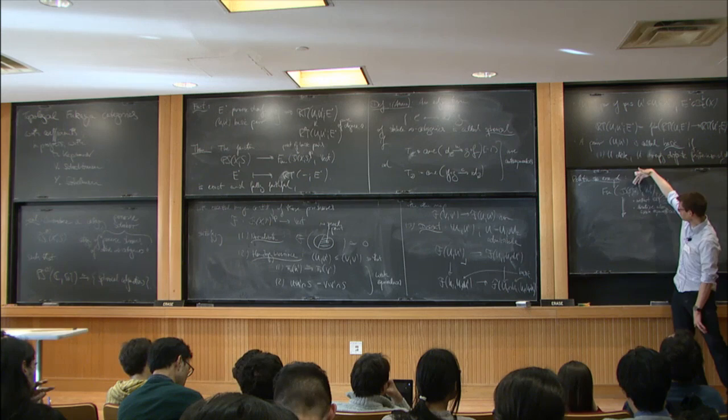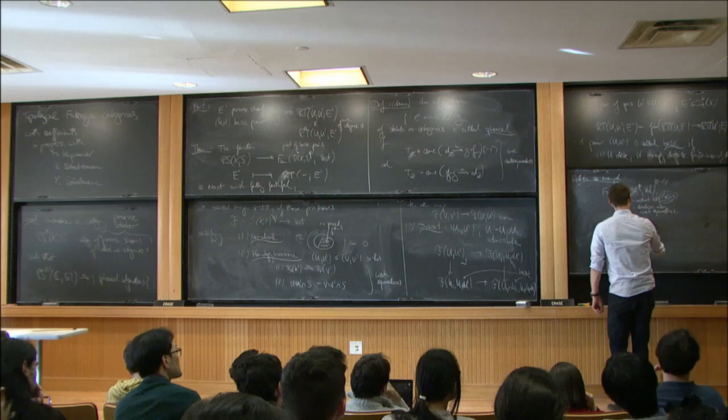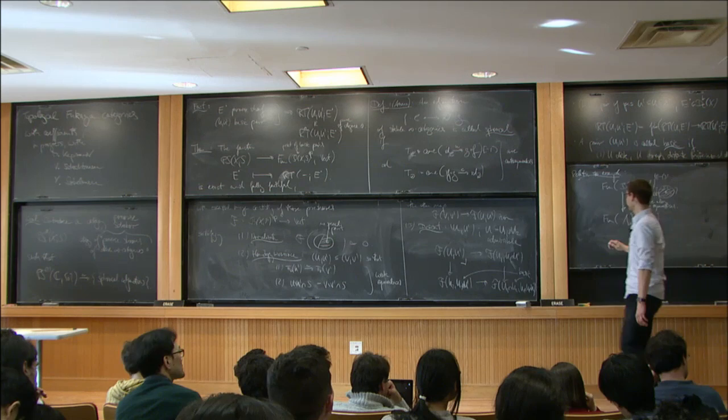After localizing along weak equivalences I obtain a localization that admits a nice combinatorial description: this is the paracyclic category lambda_∞. It's a version of the cyclic category. So the data I obtain lives on this paracyclic category, and is supposed to satisfy some condition called the Segal condition.